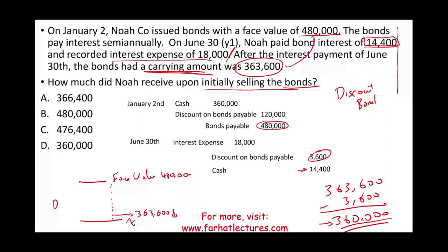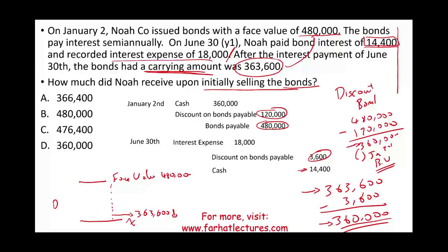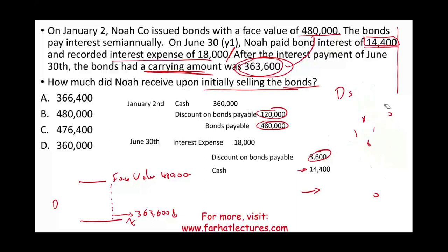So this bond was issued at $360,000. My carrying value was $363,600 six months later — removing the $3,600 amortized discount gives me $360,000 at January 2nd, confirming the total discount was $120,000. On January 2nd the book value or carrying value was $360,000. Six months later it's $363,600, meaning I amortized $3,600. This is the long way to solve it, assuming it's a simulation where you have to figure out the answer or record journal entries.